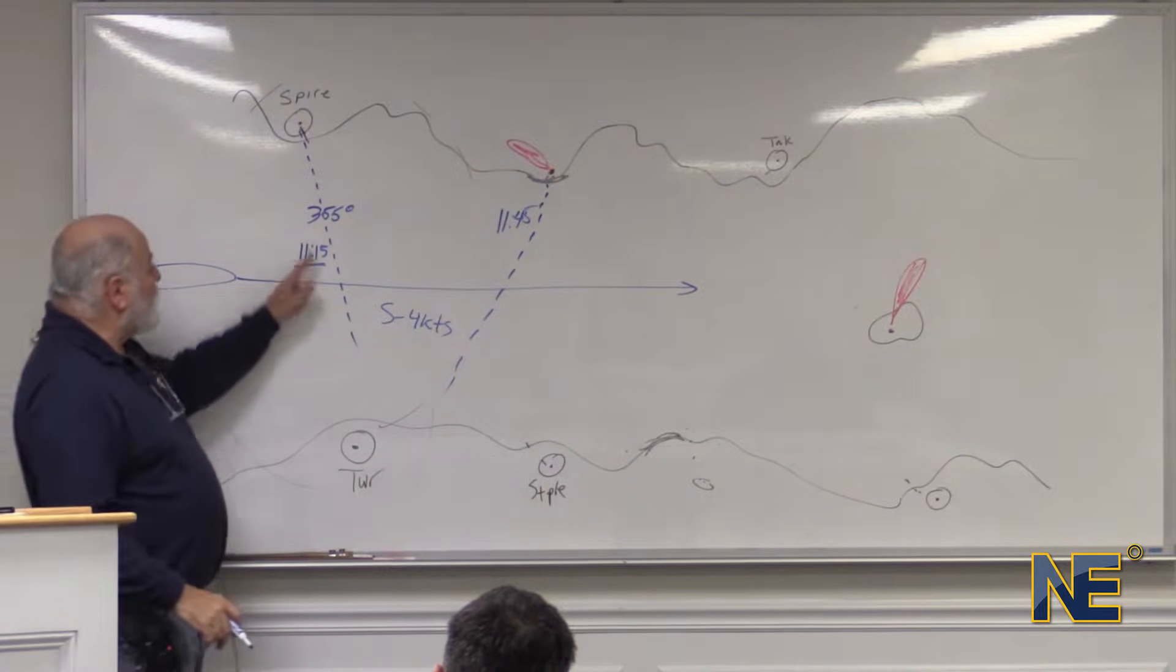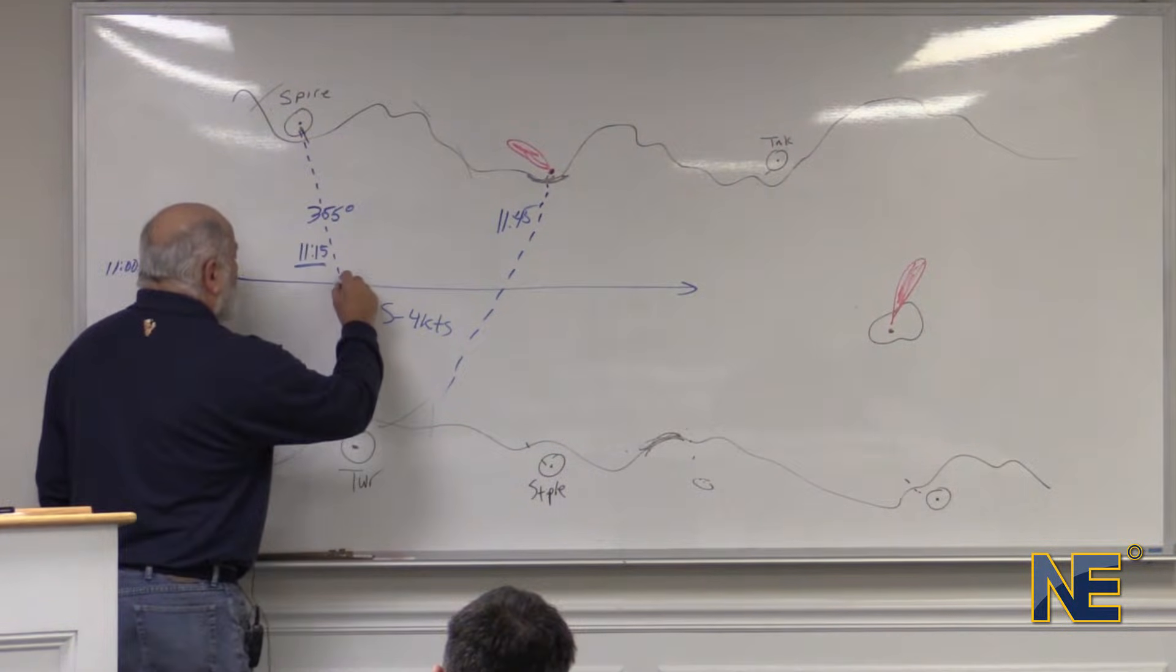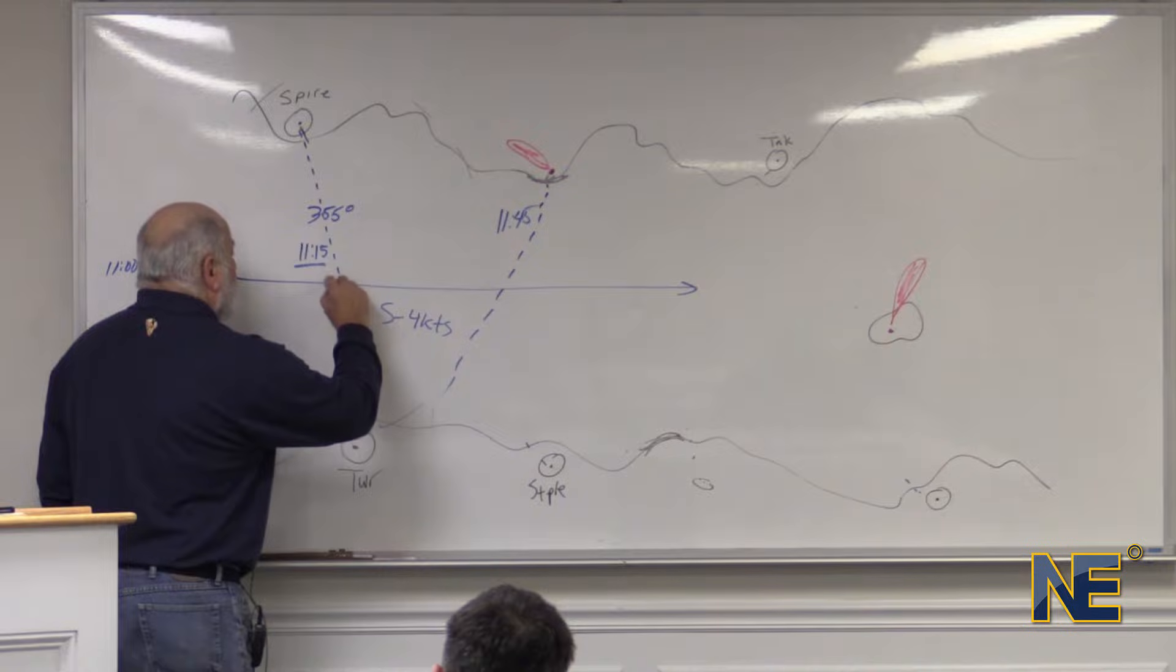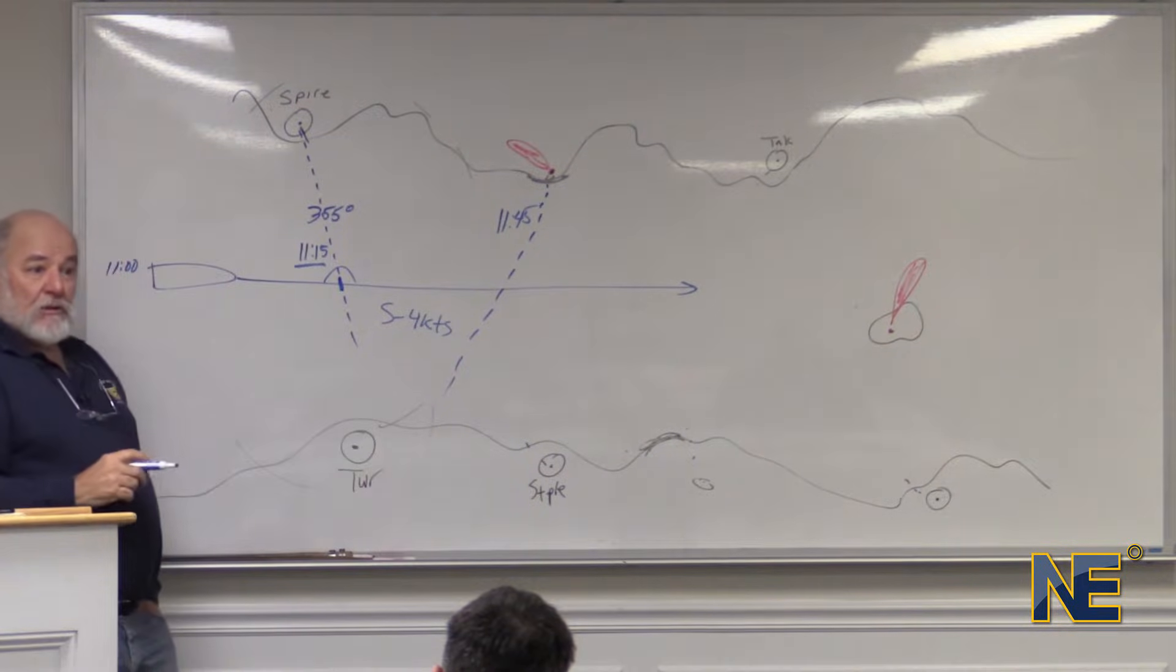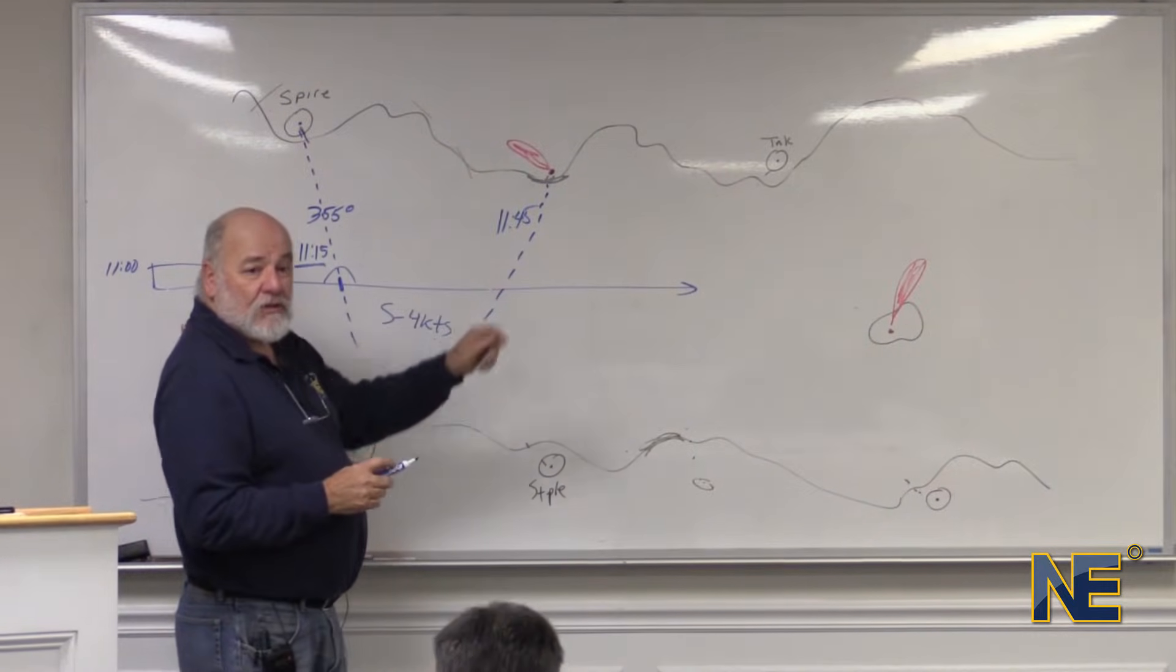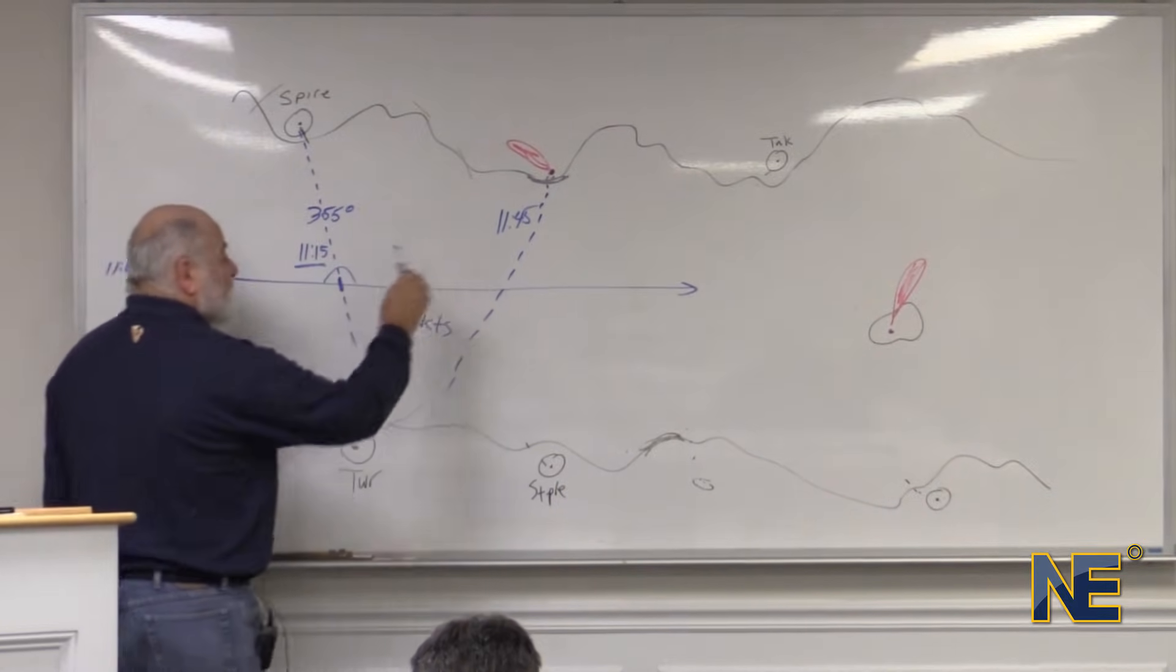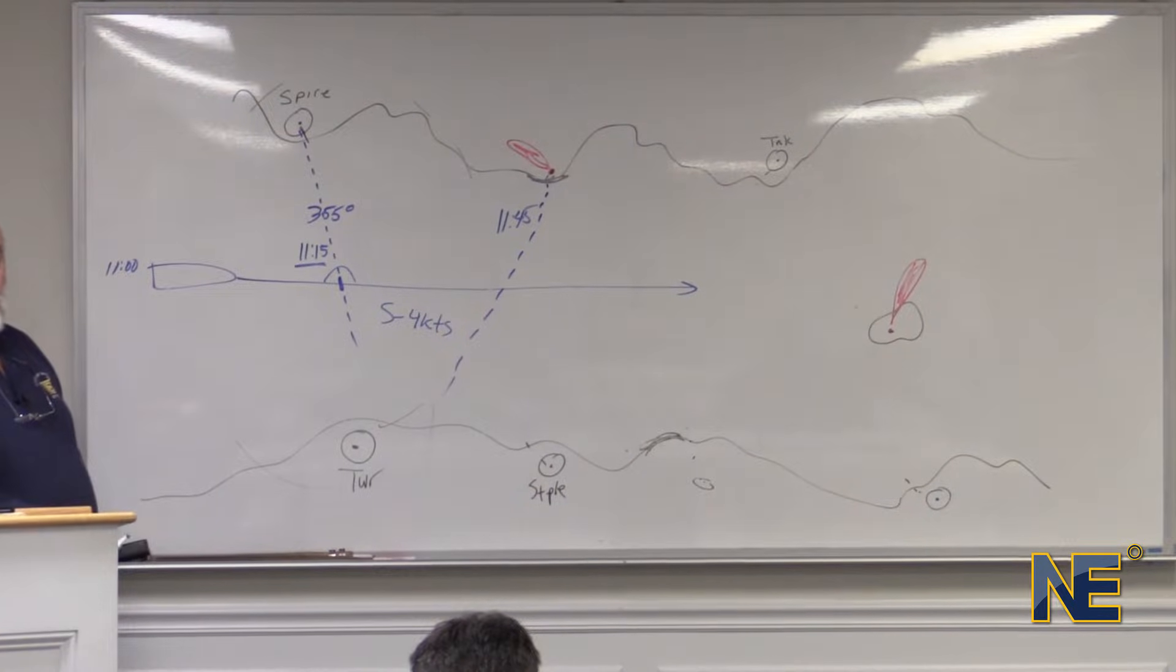Where are we? Well, at 1115 we were somewhere on this line. We're going to take a leap of faith and we're going to assume that 1115, we were right here like a DR. At 1145, all we know is we're somewhere on this line because we've moved, we've run. It's a running fix. What we need to do is we need to move this line and make it cross that line. And where it crosses that line is our fix.